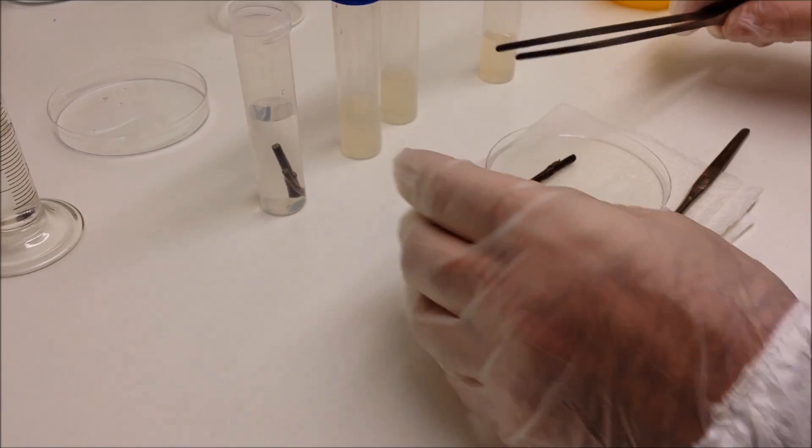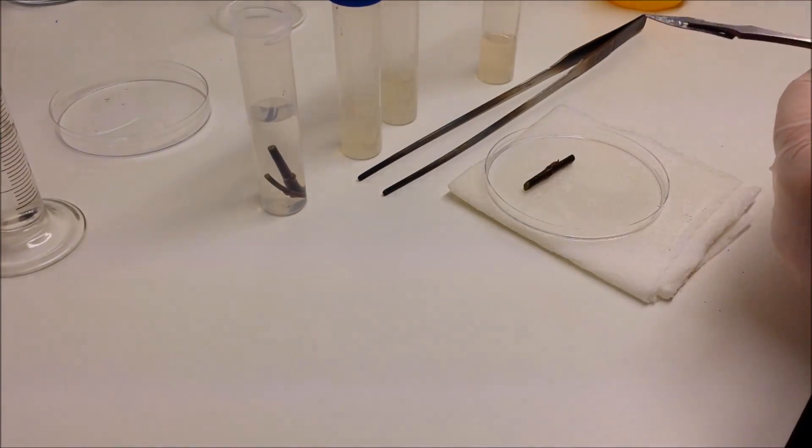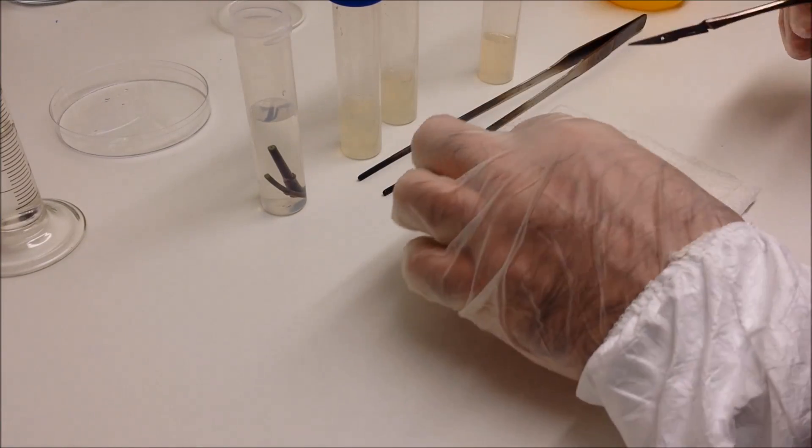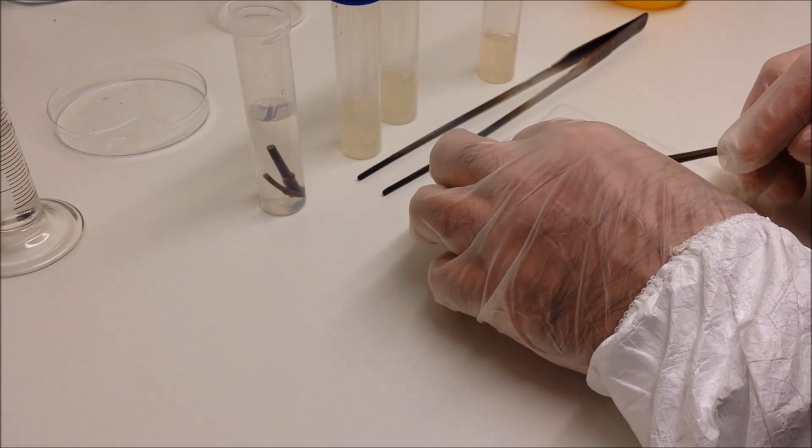So carefully remove the tweezers and place them onto the sterile petri dish. In my case, you could use a sheet of glass, you could even use a saucer, just remember to sterilize it by wiping it with alcohol. And now what I'm doing, I'm trimming off